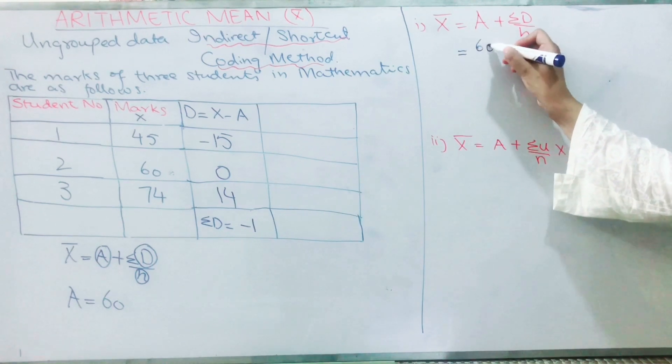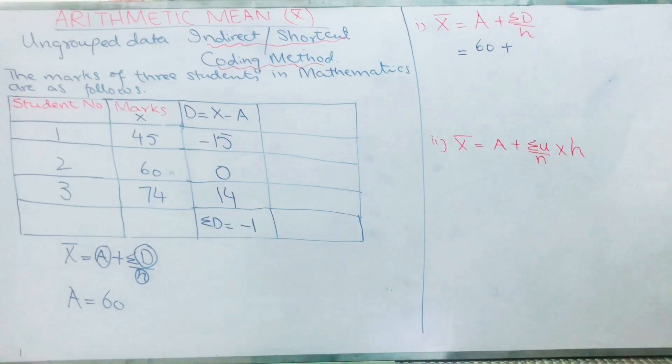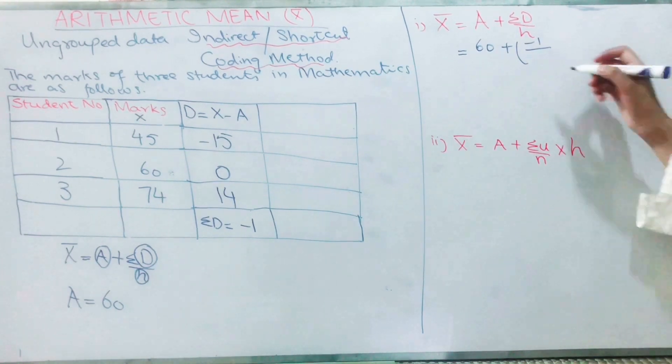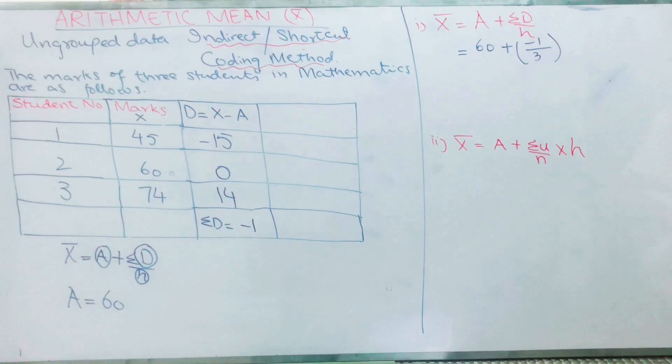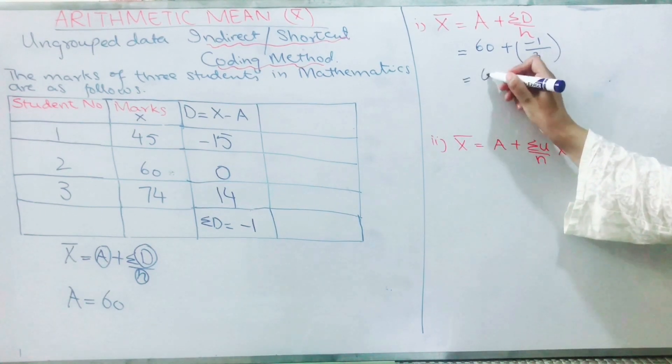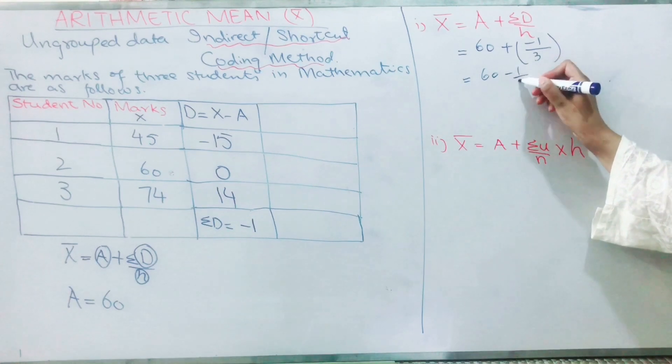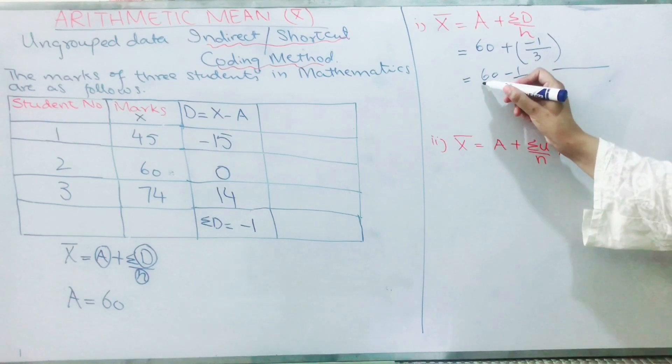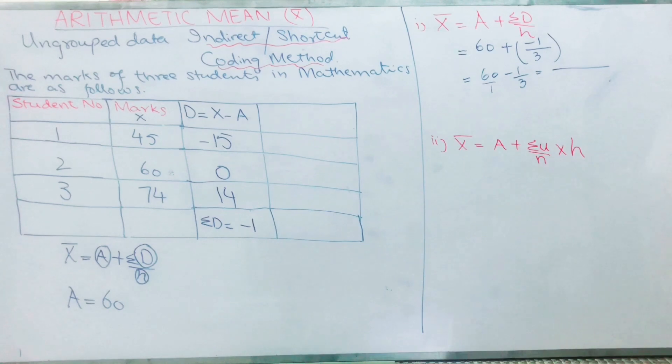A equals 60 plus ΣD equals minus 1, and n equals the number of observations, that is 3. One, two, three, how many students? Three students. So number of observations is three. So 60 minus 1/3. Now you will take the LCM. Obviously its denominator is 1, and I hope you can take the LCM. If not, then do tell me, I'll make another video for you.